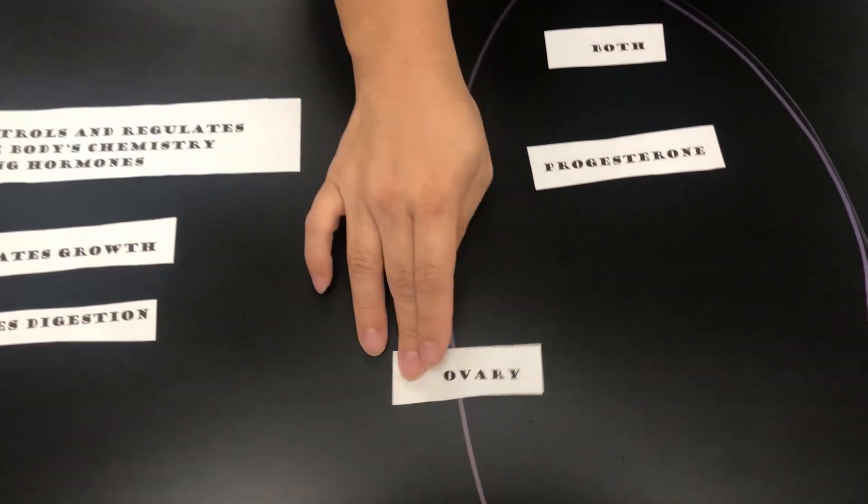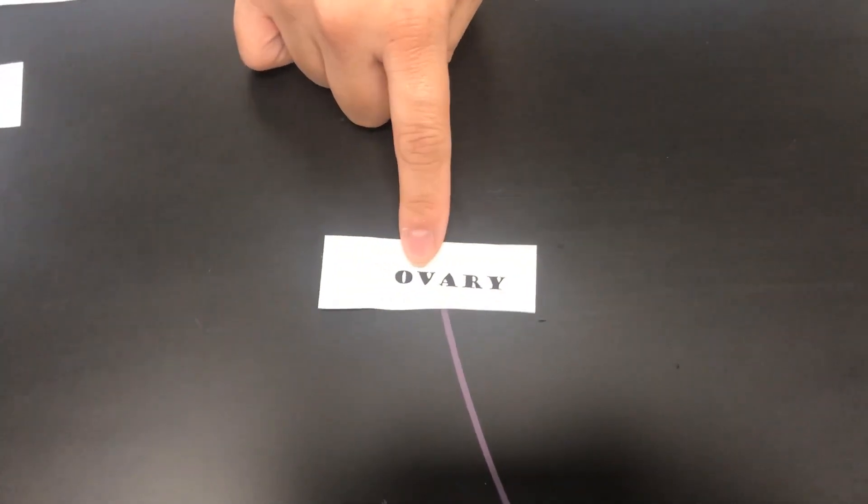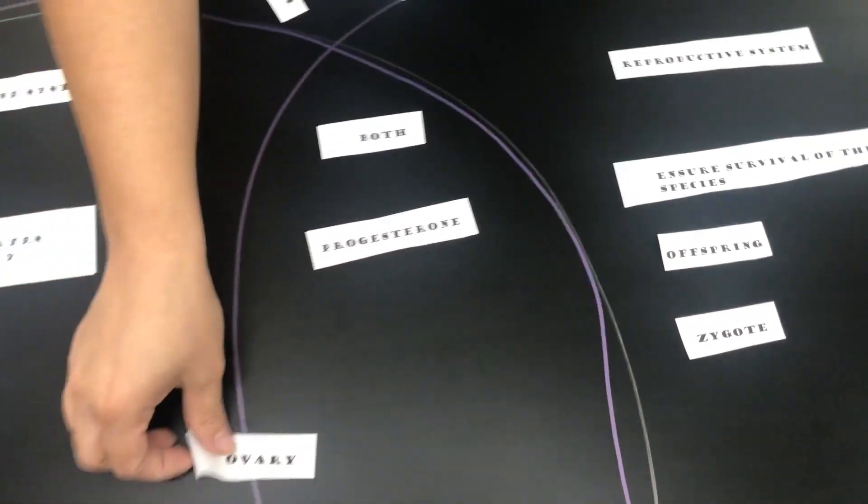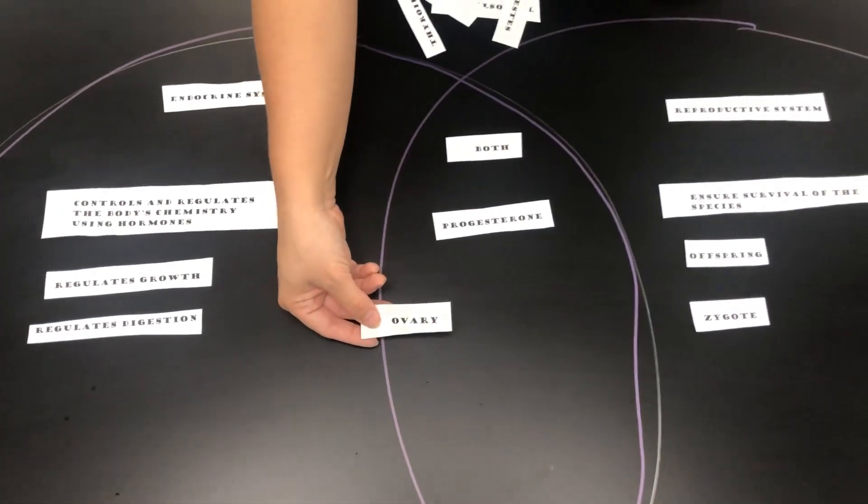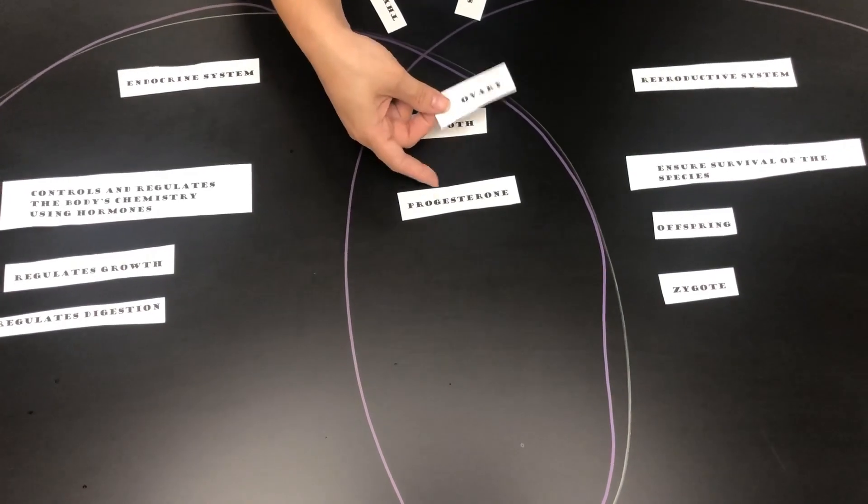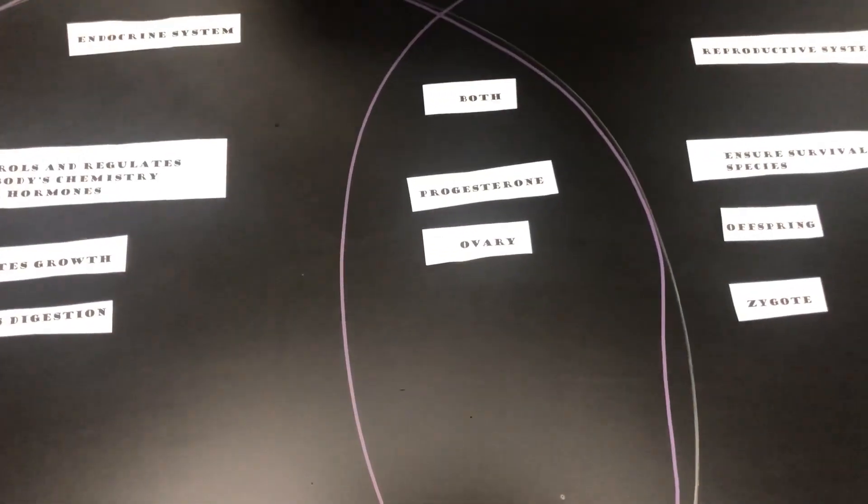Now here we have the term ovary. The ovary is part of the reproductive system, but the ovaries produce hormones, specifically like progesterone. So we would put ovary under both.